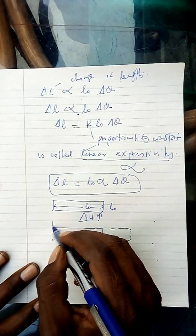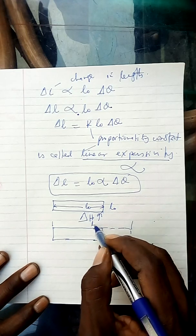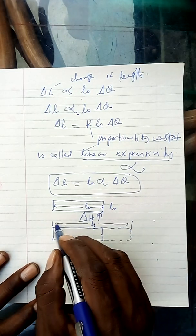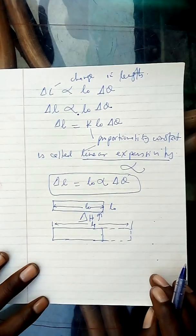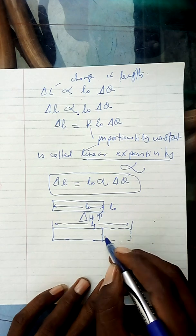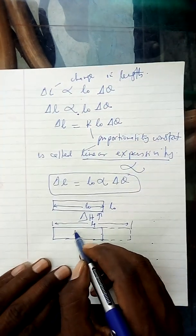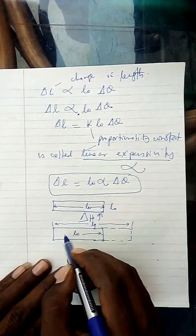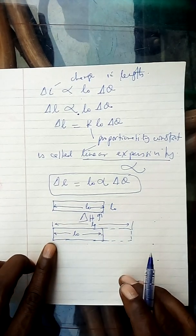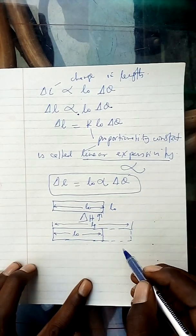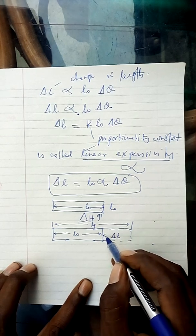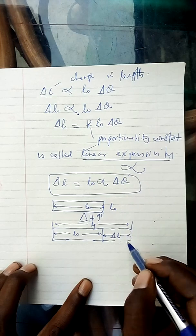The length has increased from here up to here. This is the new length — length one, L1. There is a length that has increased, and that is what we are talking about. Before it was L0, which is the length from here up to here. The length that has been increased is here — this is the change in length, from here up to here.